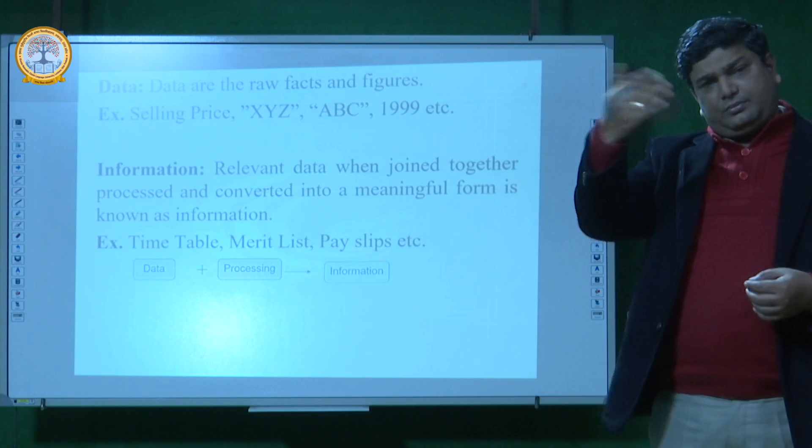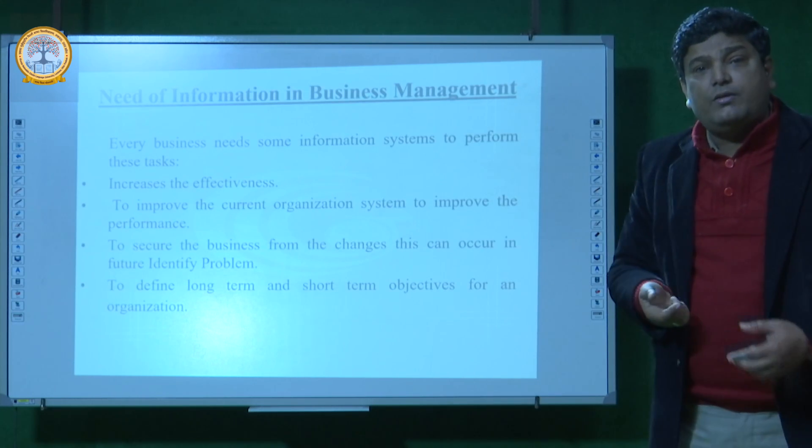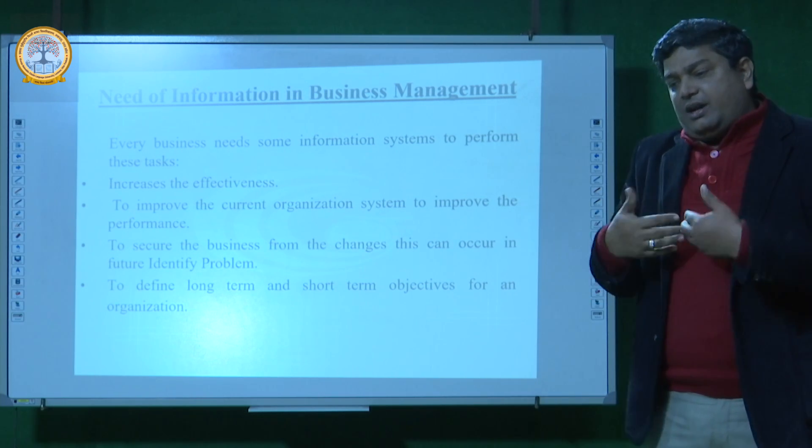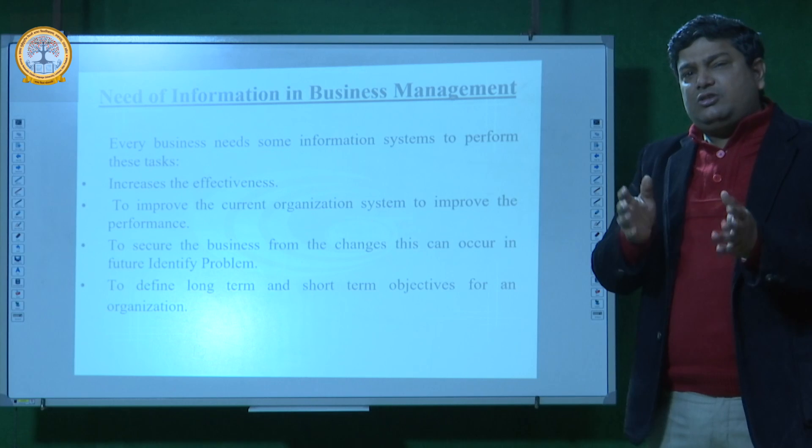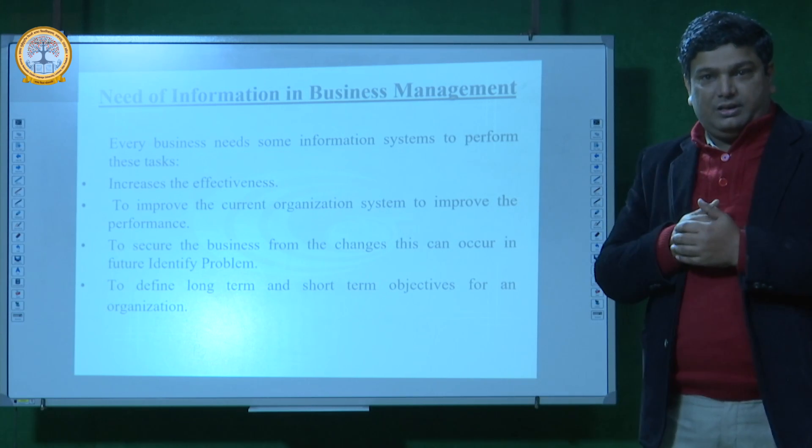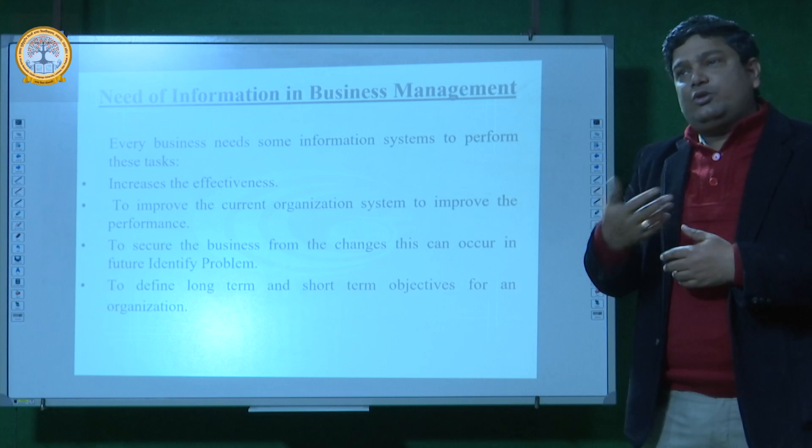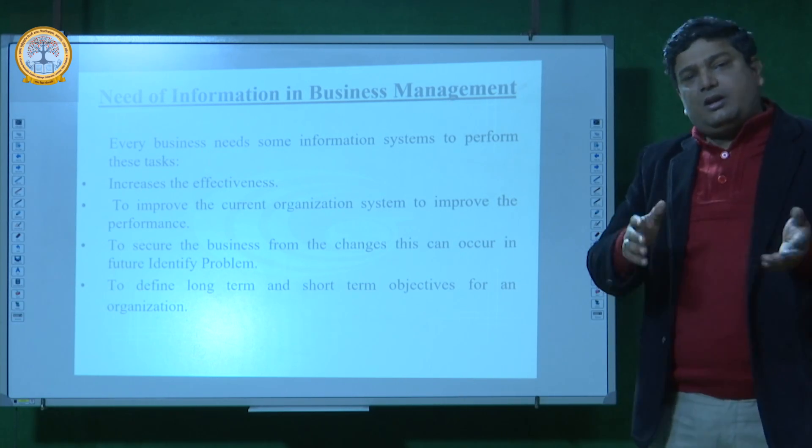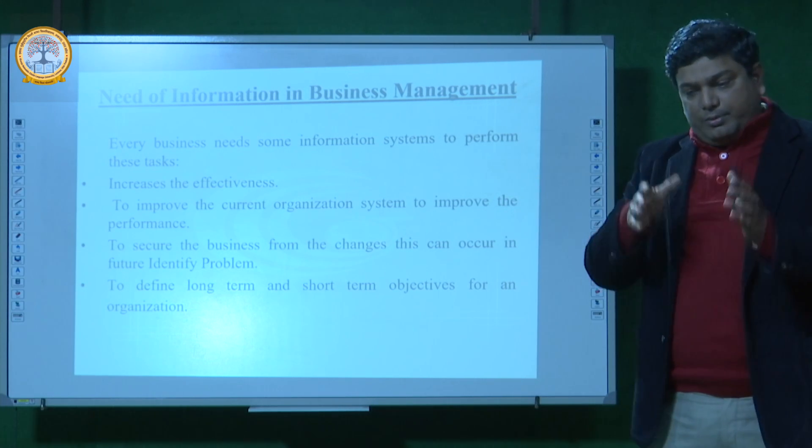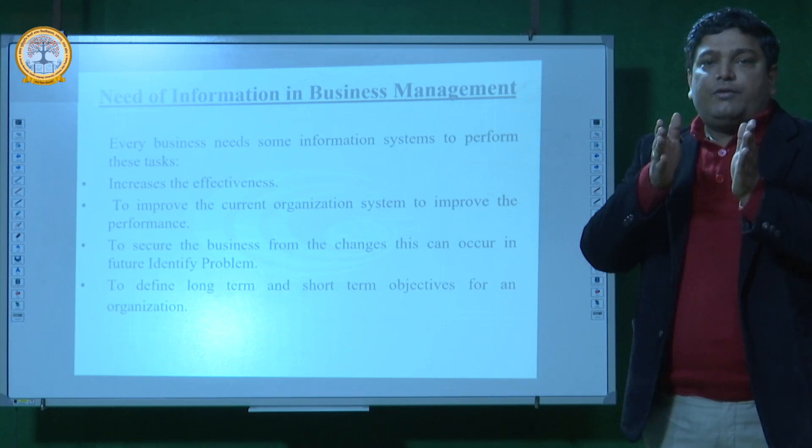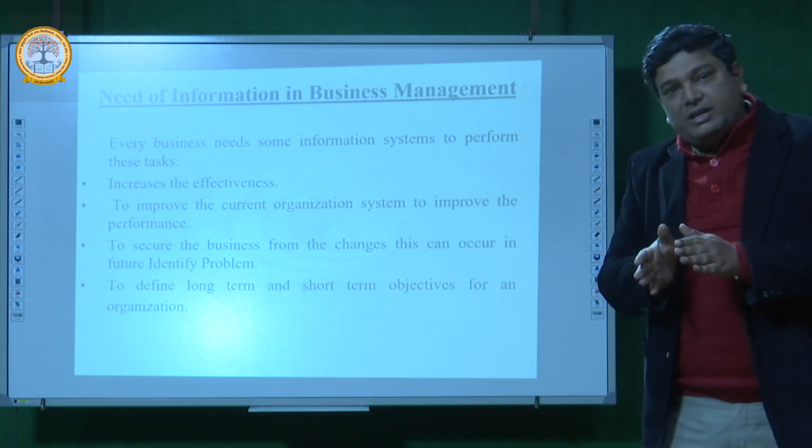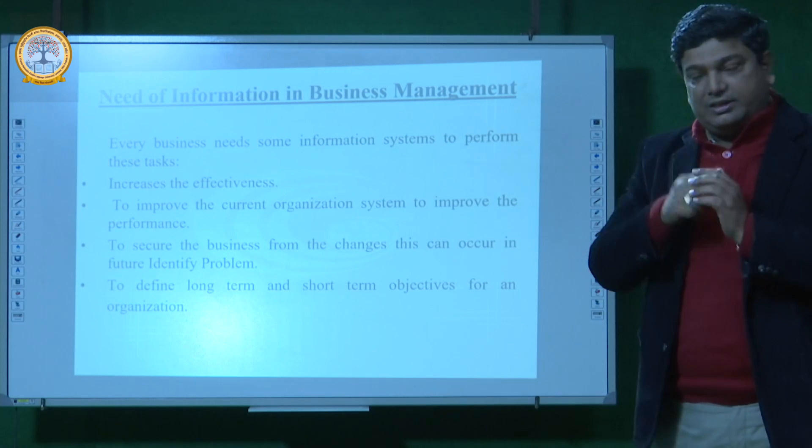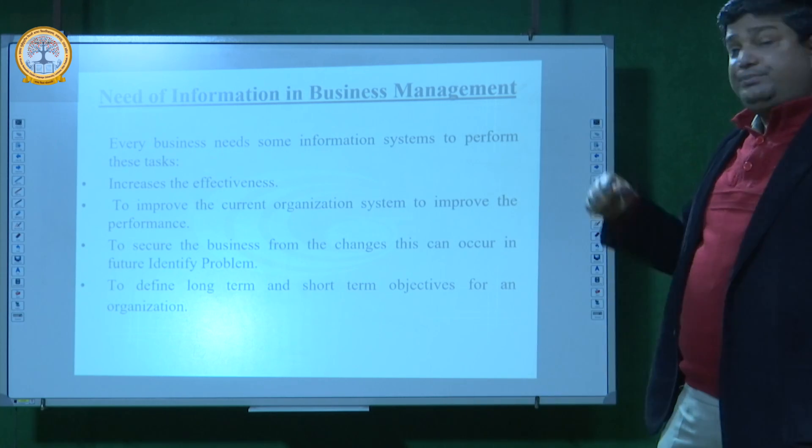Next is knowledge. Knowledge is a collection of meaningful and relevant information. After collection of information consists of judgment, is called knowledge. Suppose I'm saying Ram is more knowledgeable than Shyam. So what is the meaning? How is he more knowledgeable? It means Ram has a collection of information in relevant fields, and more collection compared to Shyam. Then it is called knowledge.